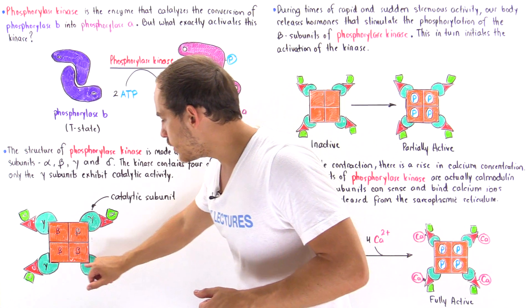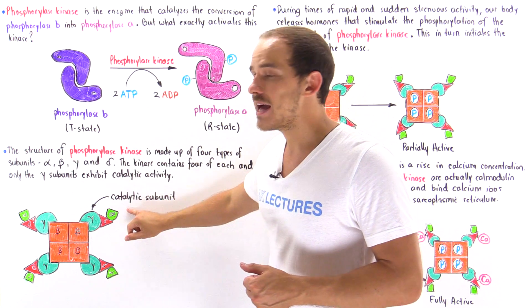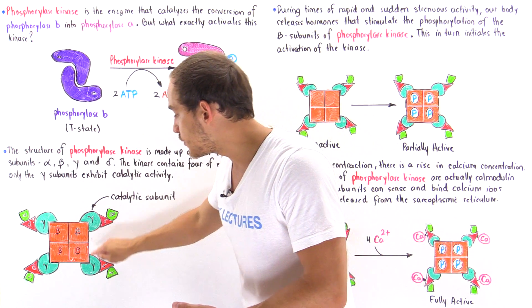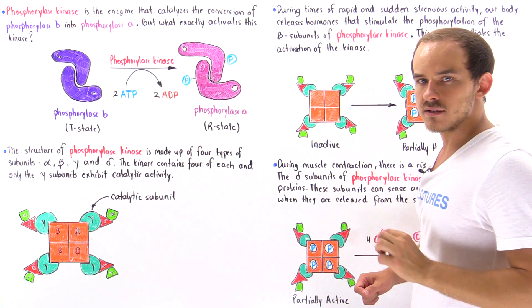Now only these green structures, the gamma structures, actually have catalytic activity. And these green structures are the ones that are responsible for catalyzing this particular step.